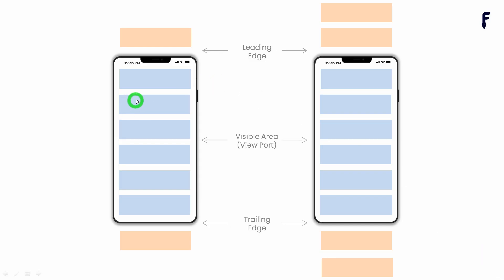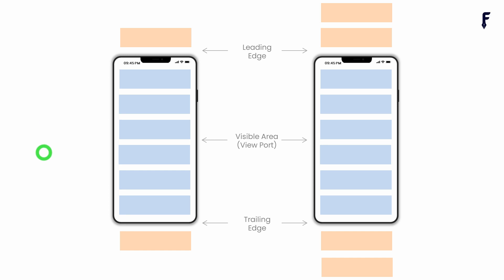ListView has a visible area called the viewport where items are displayed. Cache extent allows us to decide the area before and after the visible area to cache items that are about to become visible when users scroll up or down. For example, if each element has a height of 200 pixels and the cache extent value is exactly 200, then ListView.Builder can cache only one element at the bottom and one element at the top.